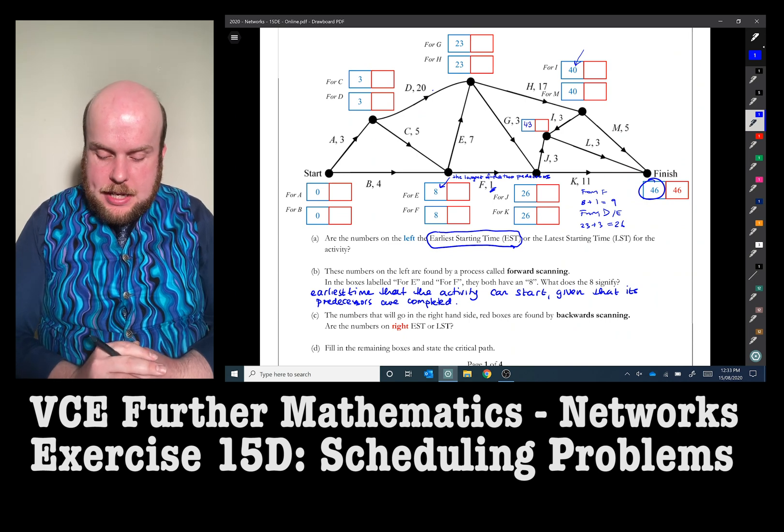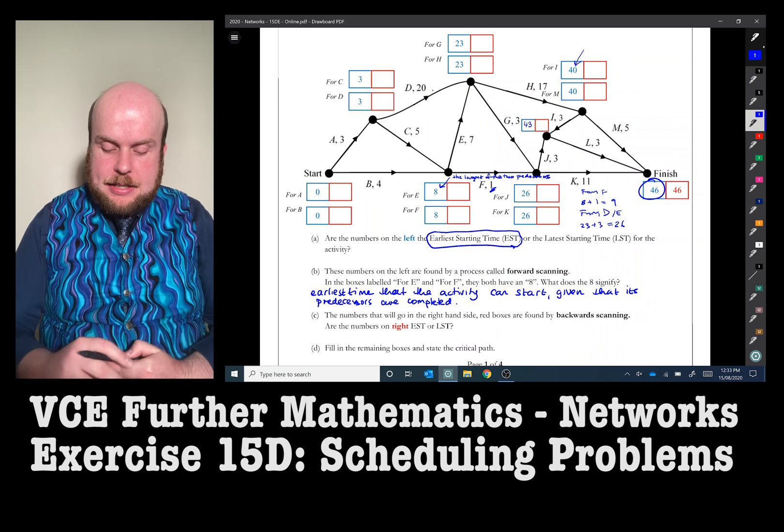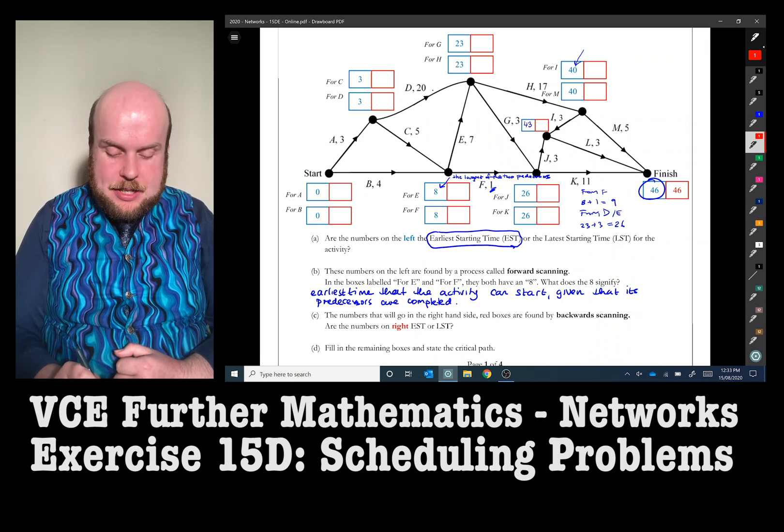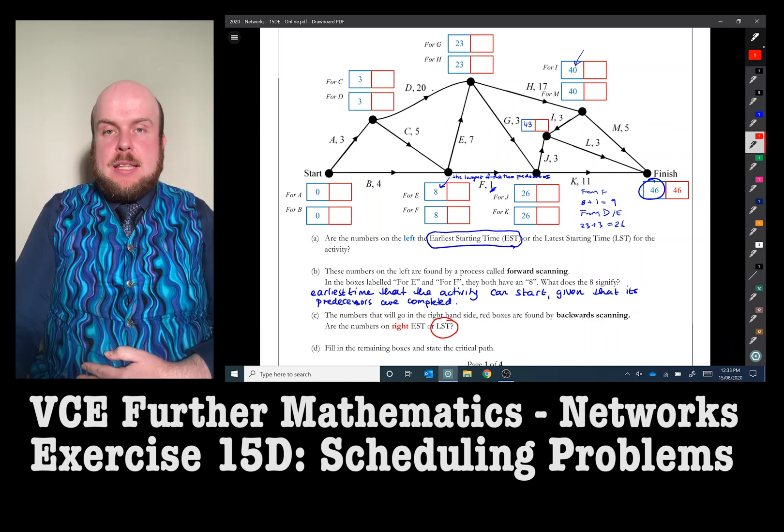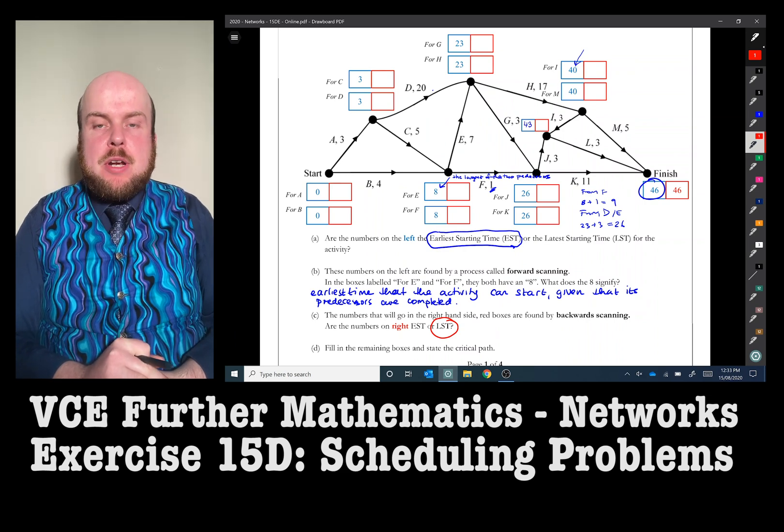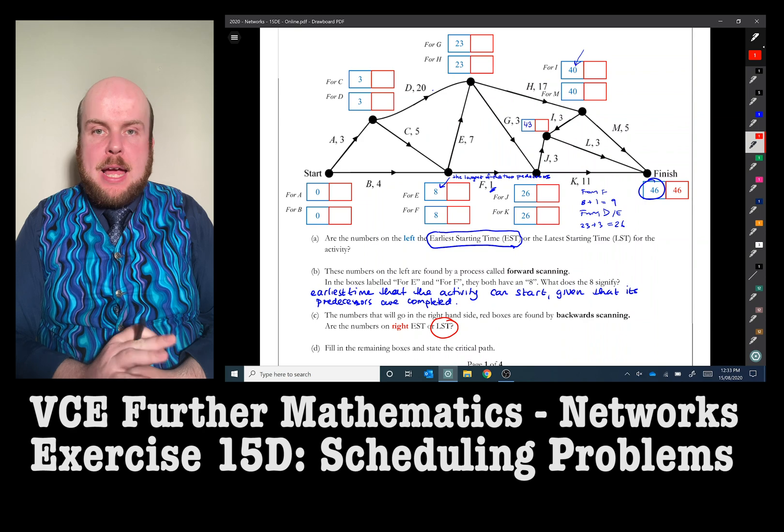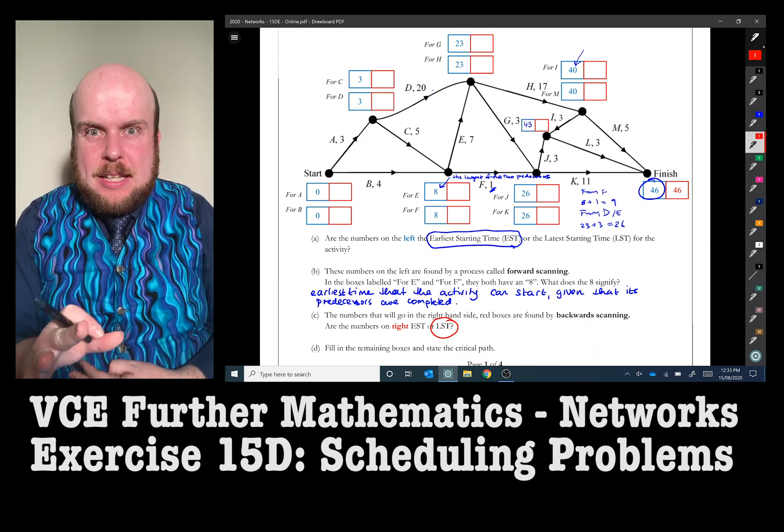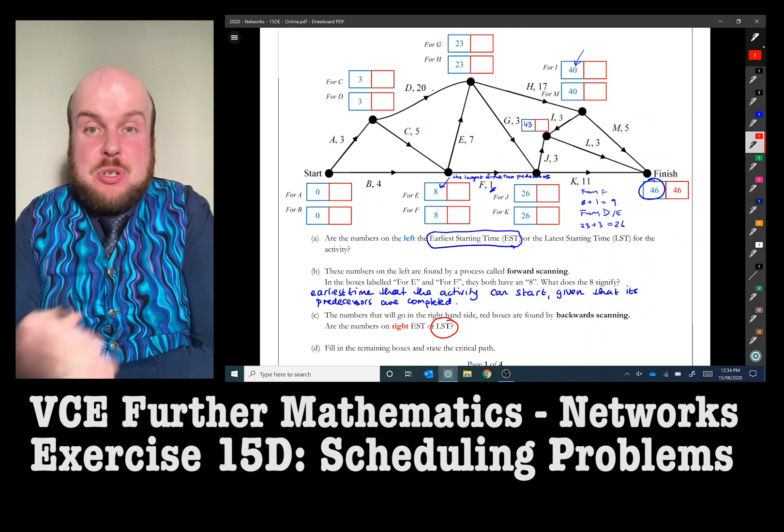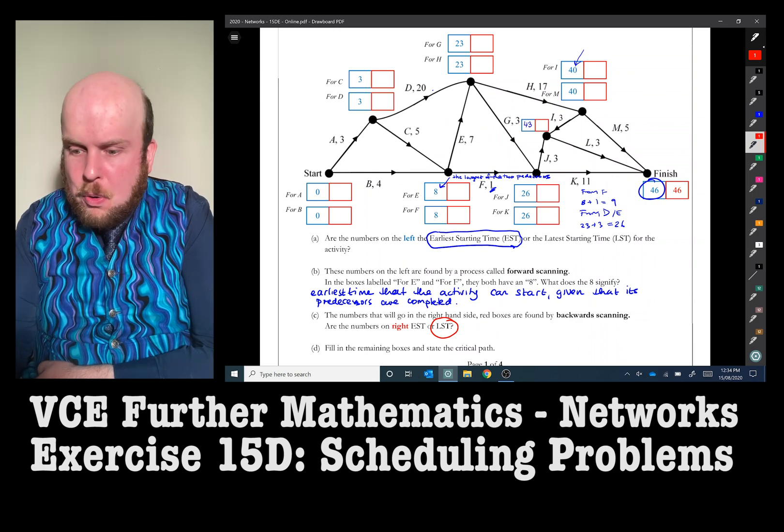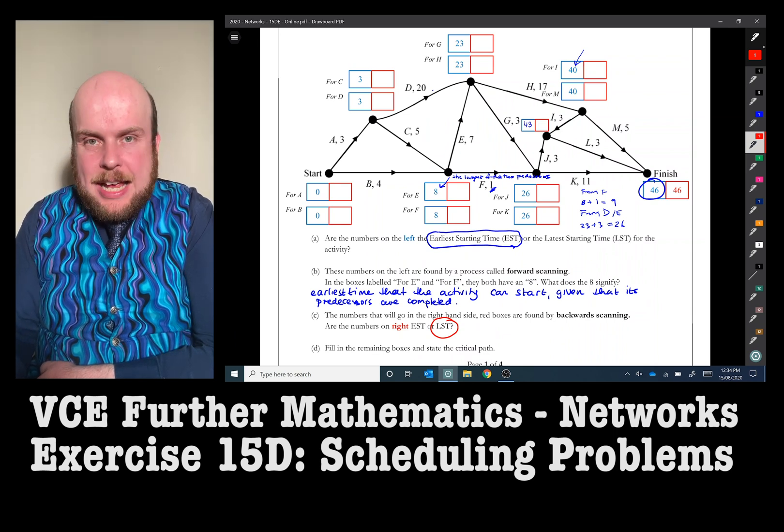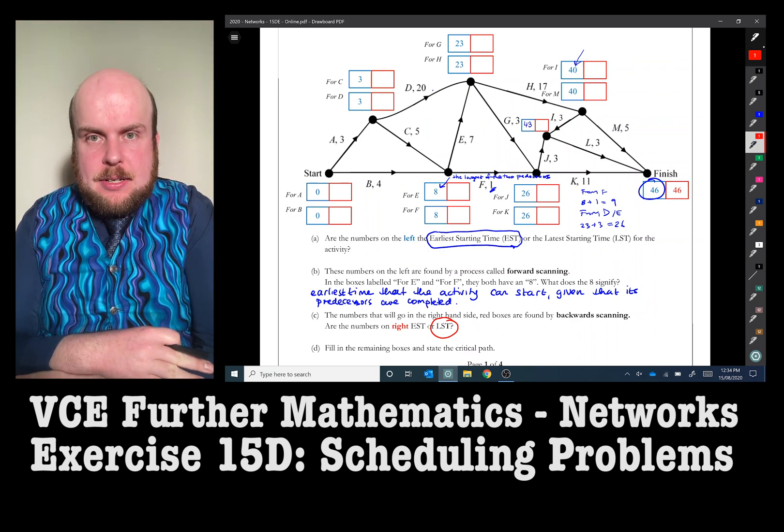The numbers that will go on the right-hand side in red boxes are found by backwards scanning. Are the numbers on the right EST or LST? Well, given that the numbers on the left are the earliest starting times, we can probably eliminate to suggest that the ones on the right would be the latest starting times. So you'll notice there that at the finish, we've got this 46 here. That is because in order to model this accurately, we want to make sure that the latest finishing time for a project is the same as its earliest finishing time, which is 46. And don't get too confused by the fact that I say finishing time, starting time, whatever. I'm just saying that the project, the quickest we can get this project out is 46 hours. So if that's the case, we want to make sure that we're not going to spend any more time than that. If we do, then all of this scheduling is for nothing. So therefore, whenever you do finish, the amount of time it takes, we always suggest that the latest time we can finish it is the same time.